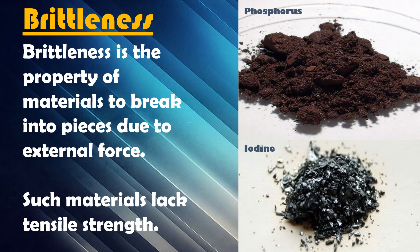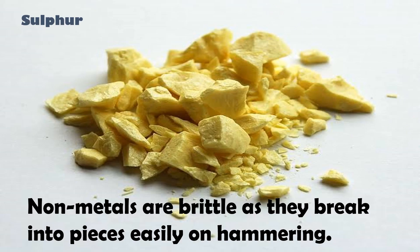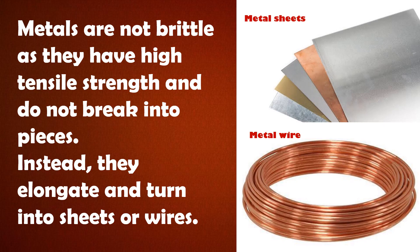Brittleness can be defined as the property of materials to break into pieces due to external force. Such materials lack tensile strength. Nonmetals are brittle as they break into pieces easily on hammering. Metals are not brittle as they have high tensile strength and do not break into pieces; instead, they elongate and turn into sheets or wires.